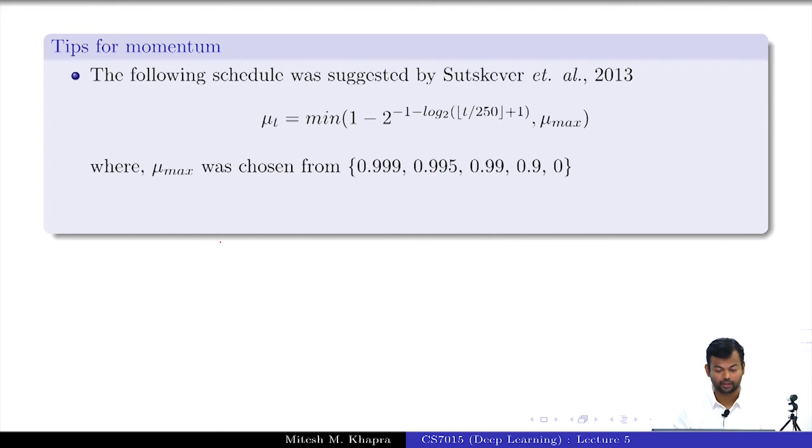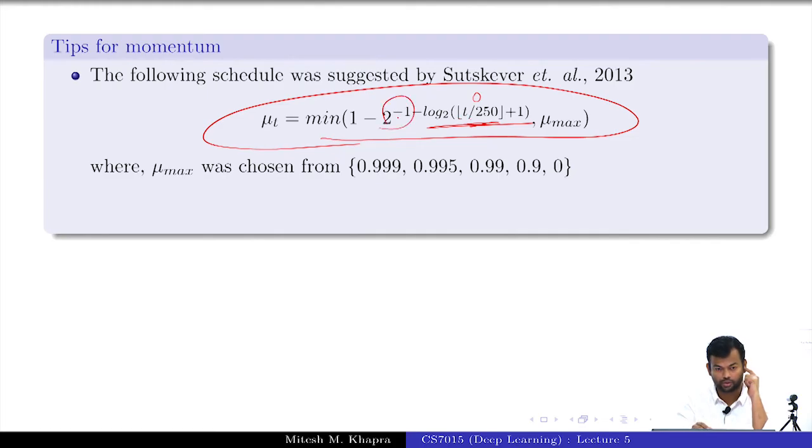Tips for the momentum. Let us see what happens at t equal to 0. This becomes 0, log 1 is 0. This is 2 raise to minus 1 minus 0 which is just 2 raise to minus 1 which is 0.5. So what is your mu t at t equal to 0? 0.5. Mu max is typically this.